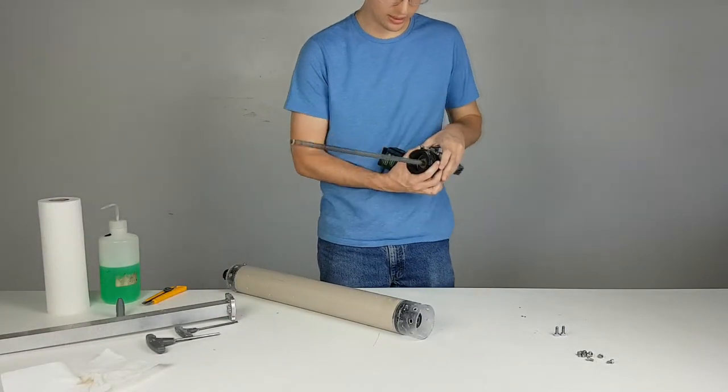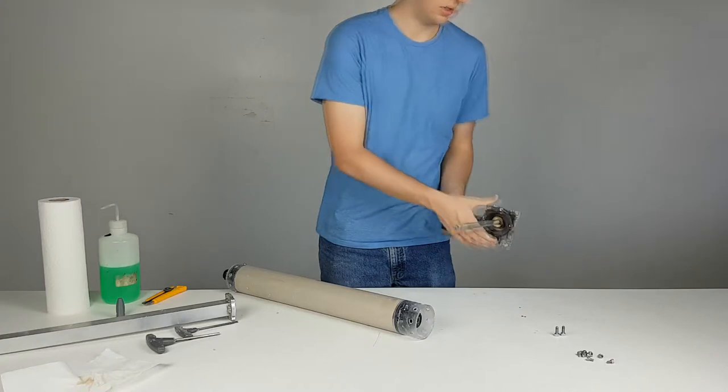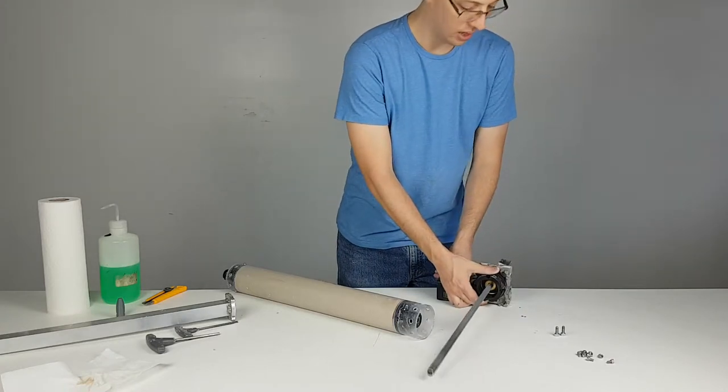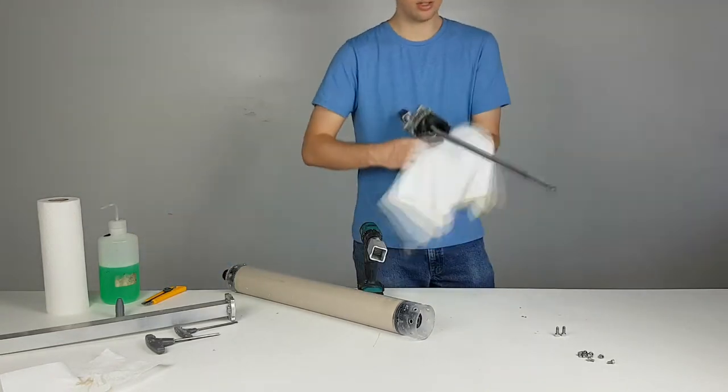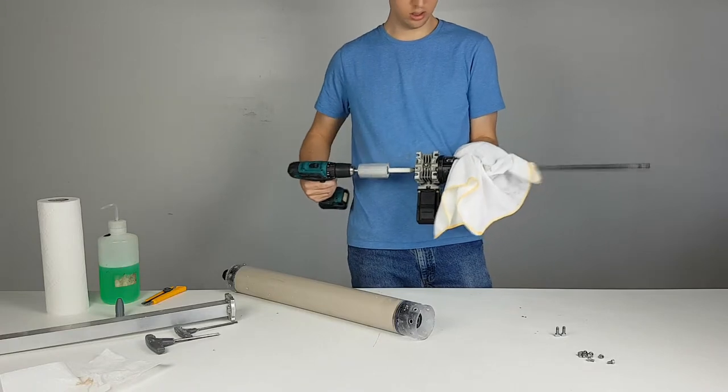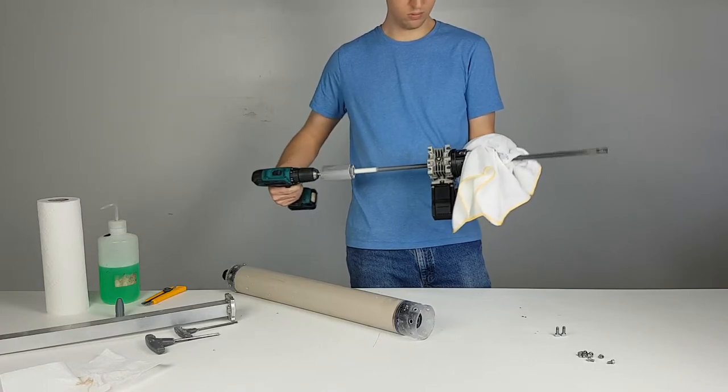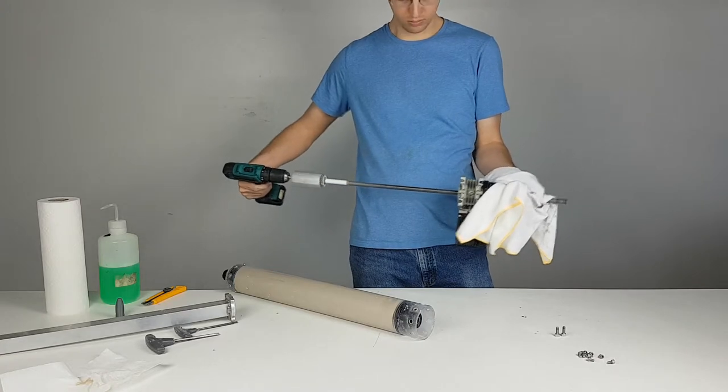Before reinstalling the gearbox you will want to visually inspect the acme screw. If the white lithium grease looks gray or you see debris on the acme screw it should be cleaned. We are going to take a drill with the ram driver tool included with the extruder. We are then going to hold a microfiber cloth to the acme screw while unscrewing it.